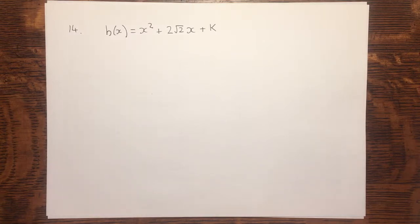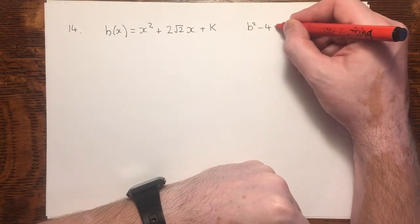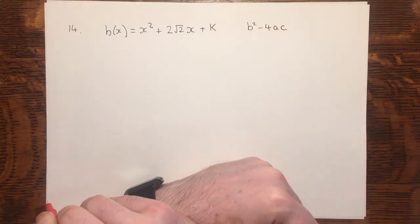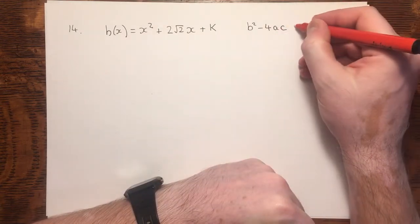As soon as we hear equal roots, we should be thinking about the discriminant. If the function has equal roots, the discriminant will equal zero.